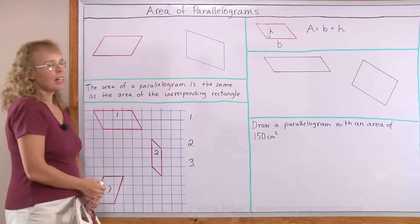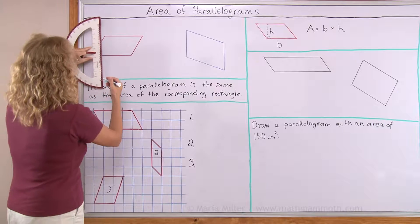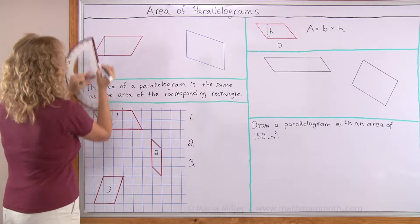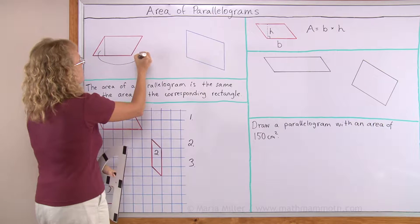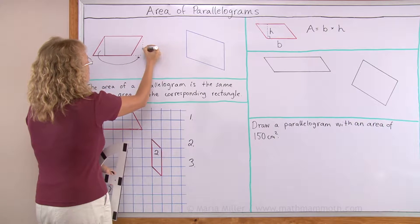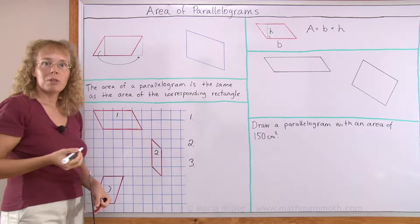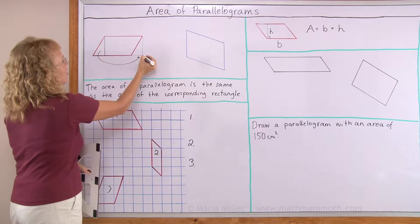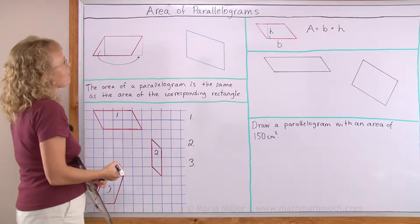Here's a parallelogram and I'm going to cut off from it this little piece — this triangle — and move it over here like this. And when the triangle moves over there we're going to get a rectangle. It's a rectangle.